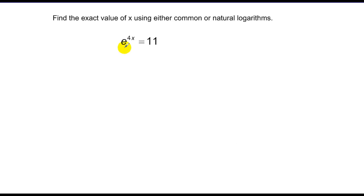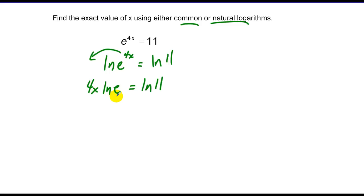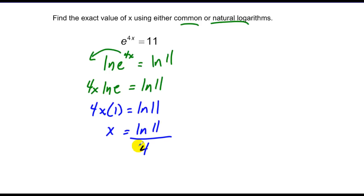Now I have a base of e, so I'm going to use natural logs. Taking the natural log of both sides, I bring the exponent out as a product: 4x times the natural log of e equals the natural log of 11. The natural log of e — what power of e is e? That's 1. So I have 4x times 1 equals the natural log of 11. Dividing by 4 gives x equals the natural log of 11 over 4. That's not 11 fourths — that's the natural log of 11, all over 4.